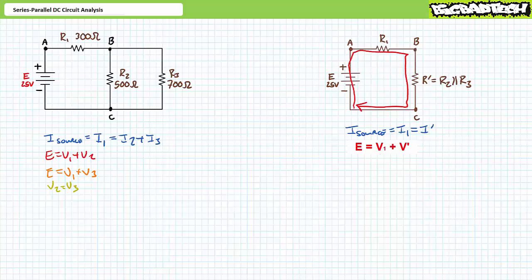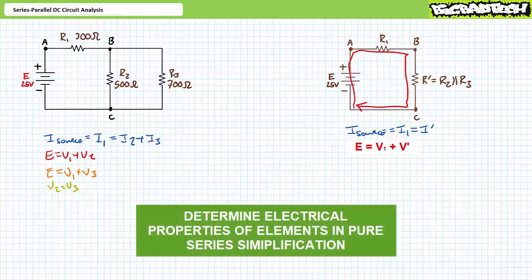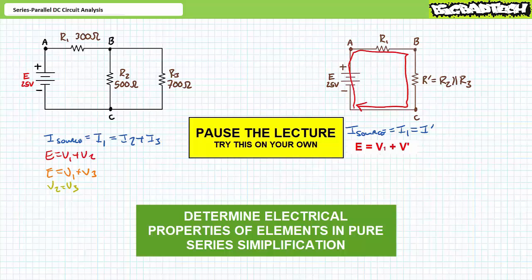As an exercise to the viewer, I invite you to solve for V1, V single prime, I source, I1, and I single prime for the series simplification only. Once you've got these values, we'll map the properties back to our original series-parallel circuit. By all means, pause the lecture and try this on your own. If you're tracking, you should have obtained the following results.